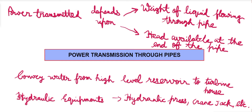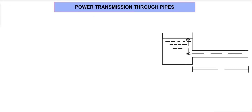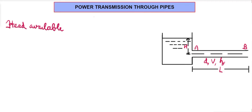I'll draw a diagram in which we have a pipe AB connected to a tank. We need to find the power available at end B of the pipe. Here, H is the total head available at the inlet of the pipe, L is the length of the pipe, D is the diameter, V is the velocity of flow, HF is the head loss due to friction, and F is the coefficient of friction.